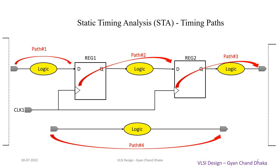In this video, just focus on what all paths the STA tool will consider for the timing analysis. Path one is from input to the data pin of the sequential element. Path two is from the clock pin of the sequential element to the data pin of the next sequential element. The third path is from the clock pin of the sequential element to the output pin of the design. And the fourth path is from input pin to output pin — there might be some combinational logic between input and output, and the STA tool will consider that path as well for the timing analysis.